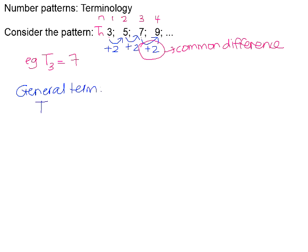The general term tells us: if I want to know the value of the Nth term, TN, I need to find out what I must do to N to generate my pattern. Because this pattern had a common difference the first time we found the difference, we say this pattern is a linear pattern. That means my variable N is to the power of 1. We immediately know if there's a common difference that N is to the power of 1, and because we're adding 2 each time, we're looking for multiples of 2.